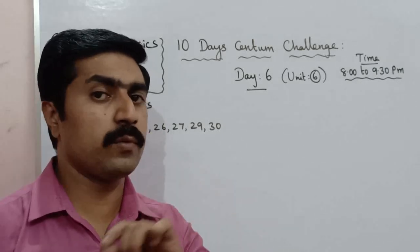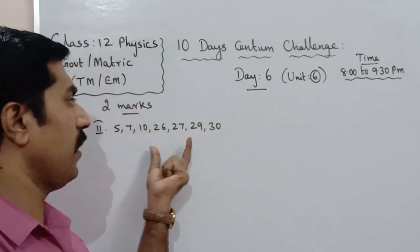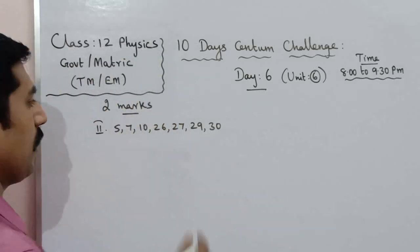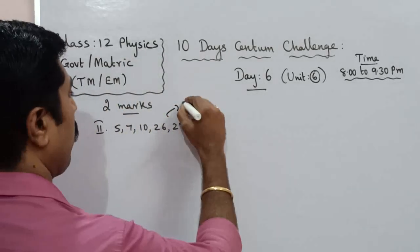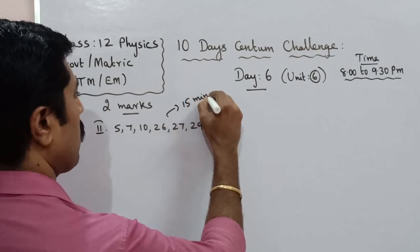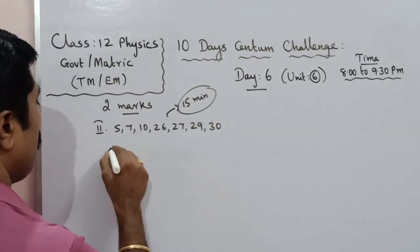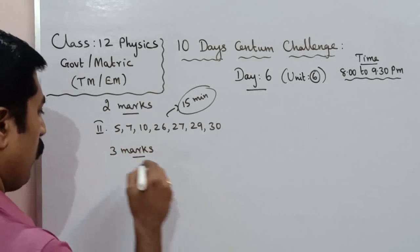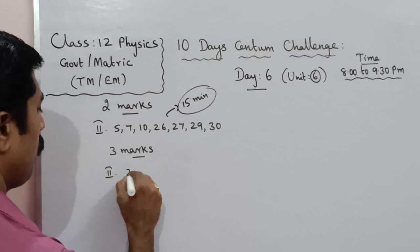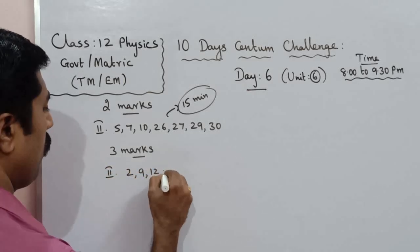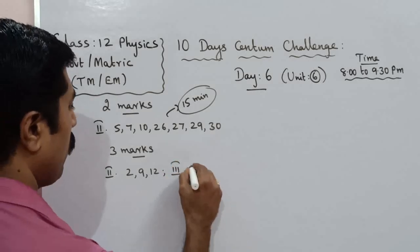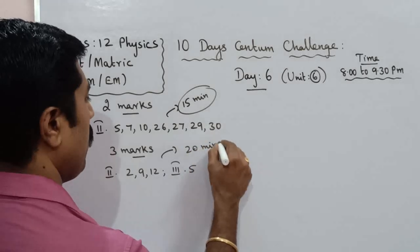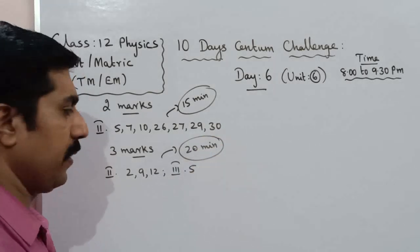Next, 3-mark questions will be done. For 3 marks, Roman numeral 2, book exercise — question numbers 2, 9, 12. Then Roman numeral 3, question number 5. Maximum 20 minutes time to prepare these.